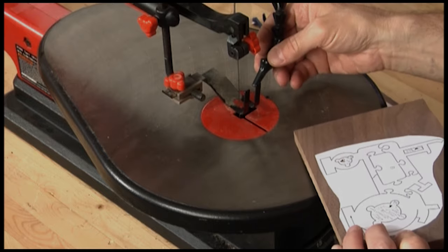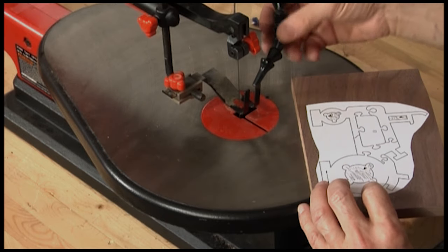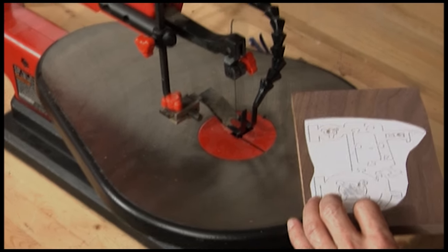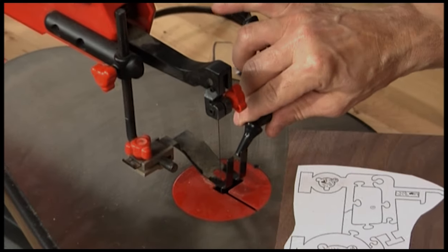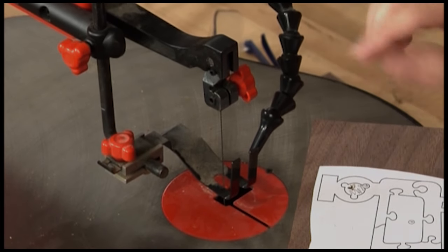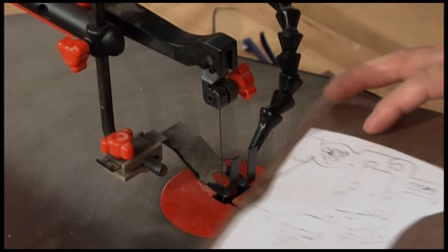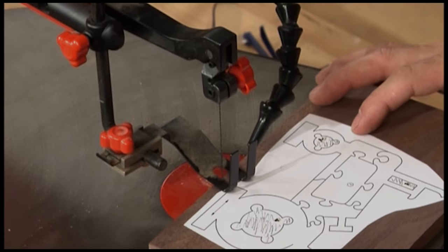This little contraption coming off the side here is a little blower. The motor runs a little bellows, forces air down here, and it directs air right at the point where the saw blade is cutting, to keep sawdust off your line so you can always see where you're cutting.